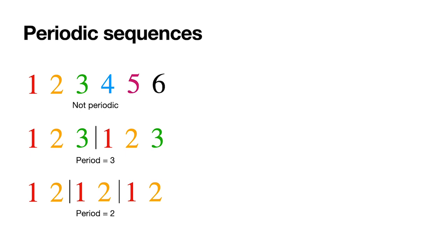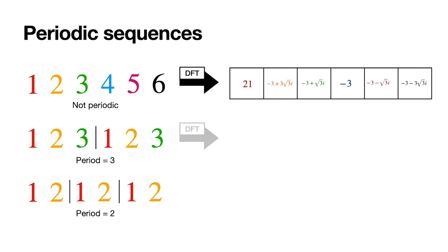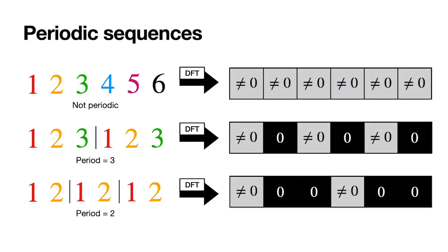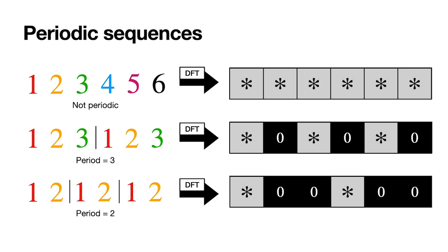When we calculate the DFT for all of these using Python, we get these numbers. I invite you to pause the video and look at how the DFT looks and see if there's a pattern that could tell us if the sequence is periodic or not. The key is looking at the zeros. When something's periodic, it has a bunch of blocks with a leading non-zero pivot and a bunch of zeros after it.